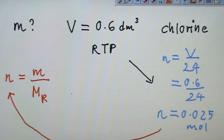Therefore, your figure would be 0.025 equals to mass over molar mass. What's the mass? Mass is what they are looking for. What's the molar mass of chlorine gas?